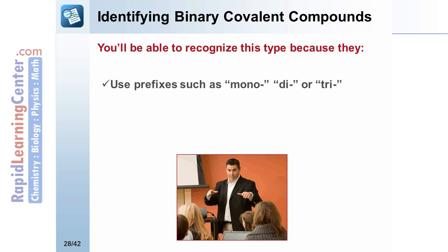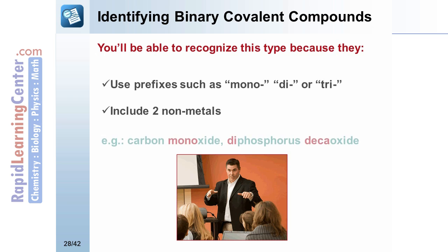You will recognize this type because they will include prefixes such as mono, di, or tri. They will also always include two non-metals. Examples are carbon monoxide or diphosphorus decaoxide.